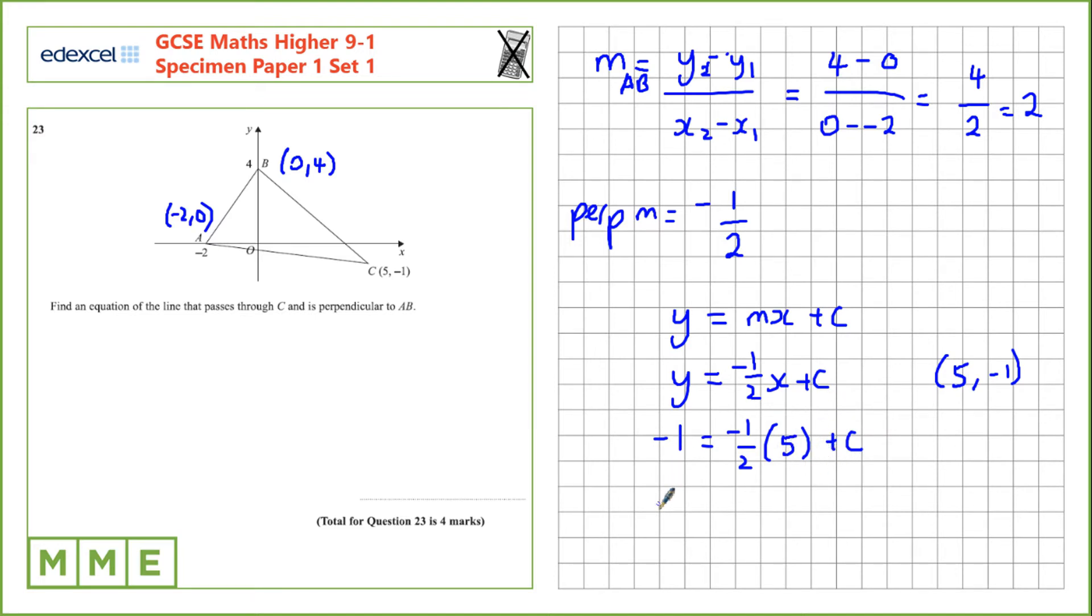Now let's rearrange this, so we have minus 1 equals minus 5 over 2 plus C, and if we want C we just need to add 5 over 2 to both sides. We'll be left with C on the right hand side, and on the left hand side we'll have 3 over 2. The final thing is we can just write out our equation Y equals negative 1 half X plus 3 over 2.